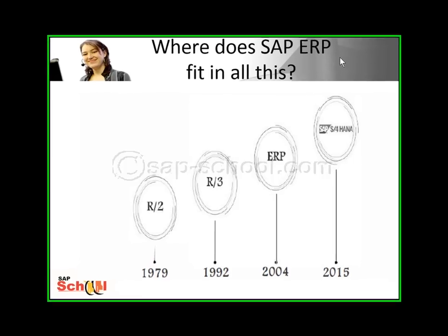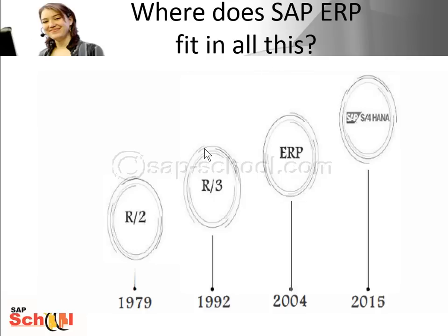So where does SAP ERP fit in all this? SAP has been the pioneer of the ERP market and the number one vendor across the world ever since they launched their R2 suite in the 1970s. This was subsequently upgraded to a 3-tier R3 system, which then went on to become the ERP system. There were several releases between 2004 and 2015, including the business suite of products and BW. The latest offering is S/4 HANA, which can be deployed on cloud, on-premise, or a hybrid approach. Hope you found this session useful. See you again soon.